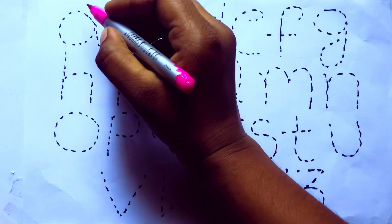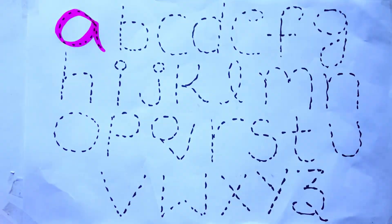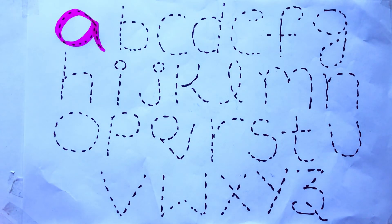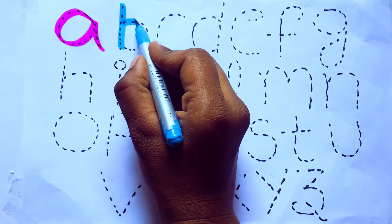Let's draw alphabets. Pink color. A, A for Apple. Sky blue color. B, B for Bob.